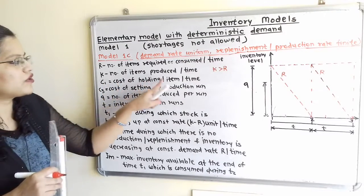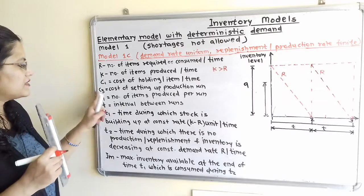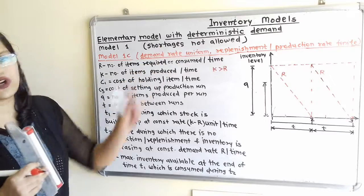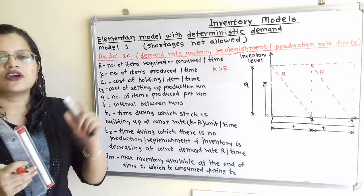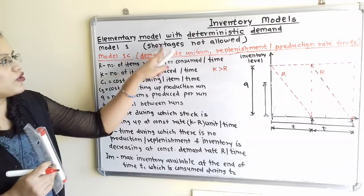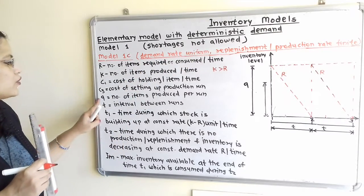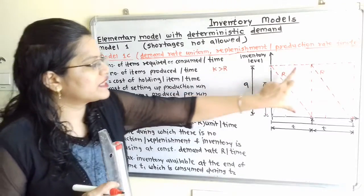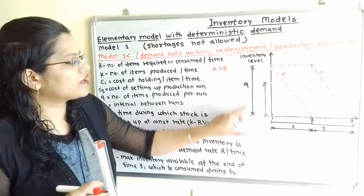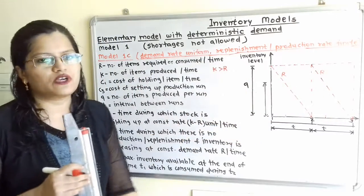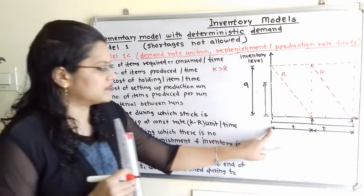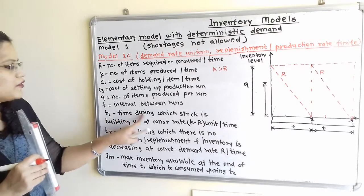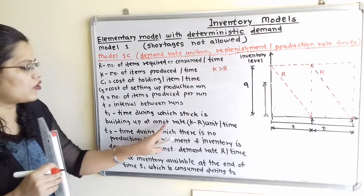C1 is the cost of holding per item per unit time. C3 is the cost of setting up a production run. Since shortages are not allowed, C2 (shortage cost) is considered infinite. Q is the number of items produced per run. T is the interval between runs. T1 is the time during which stock is building up at a constant rate.